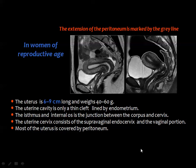The uterus is an extraperitoneal organ covered on its surface by the peritoneal cavity, which also covers the urinary bladder.